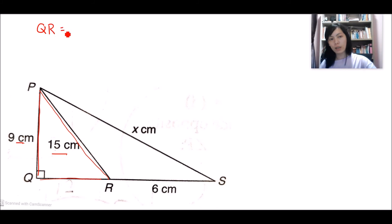QR is actually 12 cm. Why? Because, again, 3, 4, 5; 9, 12, 15. So QR is actually 12. I'm going to write it straight away here. This is 12 cm.